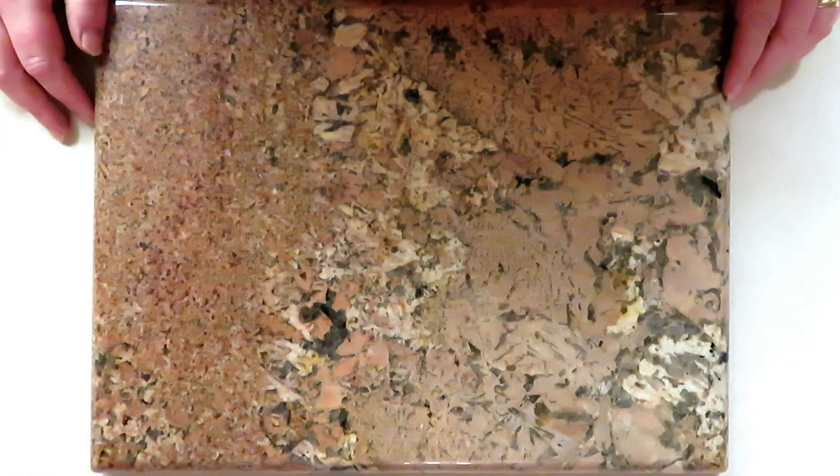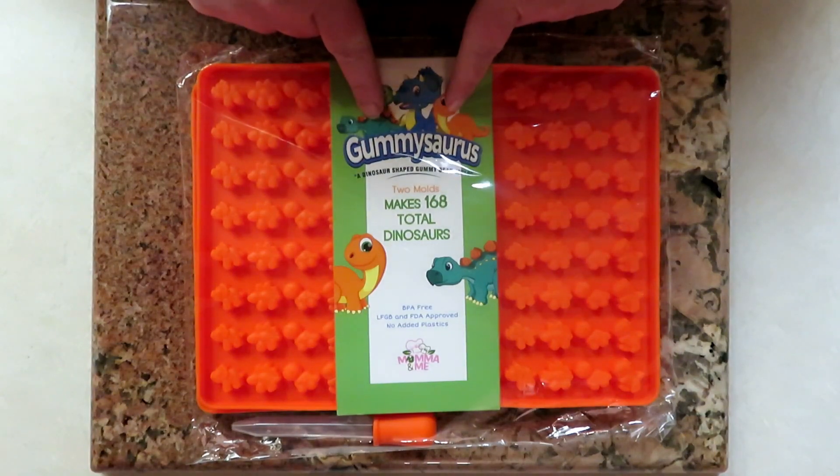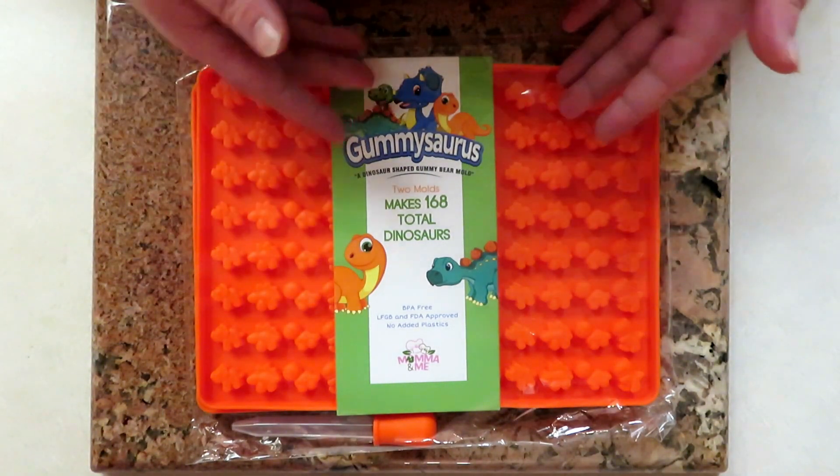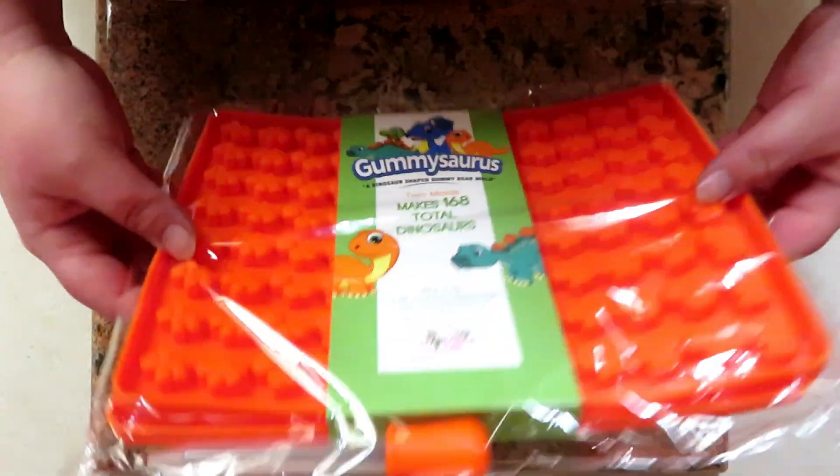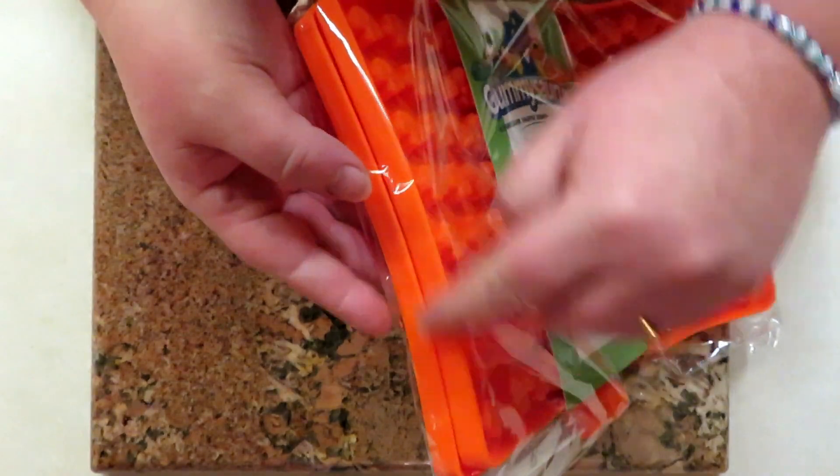Hello everybody, this is Maria with Desert Cloud Soapworks and I've got a fun tutorial for you today. First I got to show you this - this is a Gummy Saurus silicone mold to actually make gummies and it's really cool. It comes with two different molds, well they're not different, they're the same molds but you get two of them.